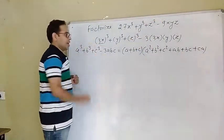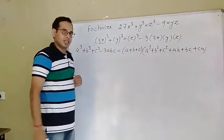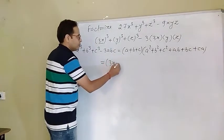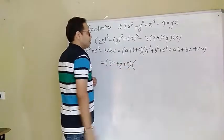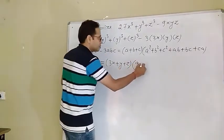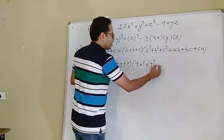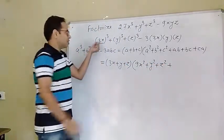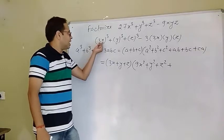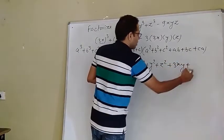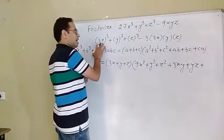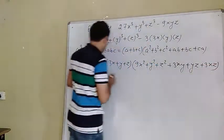Here a = 3x, b = y, and c = z. Substituting: we get (3x + y + z) multiplied by (9x² + y² + z² - 3xy - yz - 3xz). So this is the required factorization of 27x³ + y³ + z³ - 9xyz. I hope you have understood, Zara.